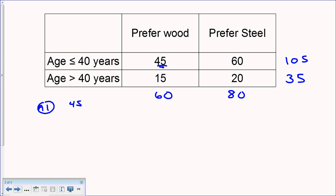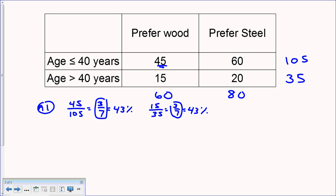For question A1: younger riders who prefer wood are 45 out of 105 total. Dividing both by 15 gives 3/7, which is about 43%. For older riders: 15 out of 35 — dividing both by 5 also gives 3/7, the same fraction and same percentage. Since it's the same ratio, the statement that young riders are three times as likely to prefer wood is false.